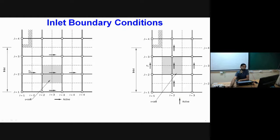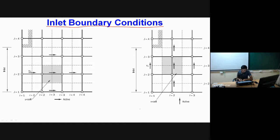Let us now look at boundary conditions one by one. First, the inlet boundary condition. At an inlet, we generally have a known value of velocity. If I consider flow through a pipe, at the inlet, say a constant velocity u = 5 m/s is given, then at every node the velocity is 5 m/s. Sometimes, a fully developed parabolic velocity profile may be given.